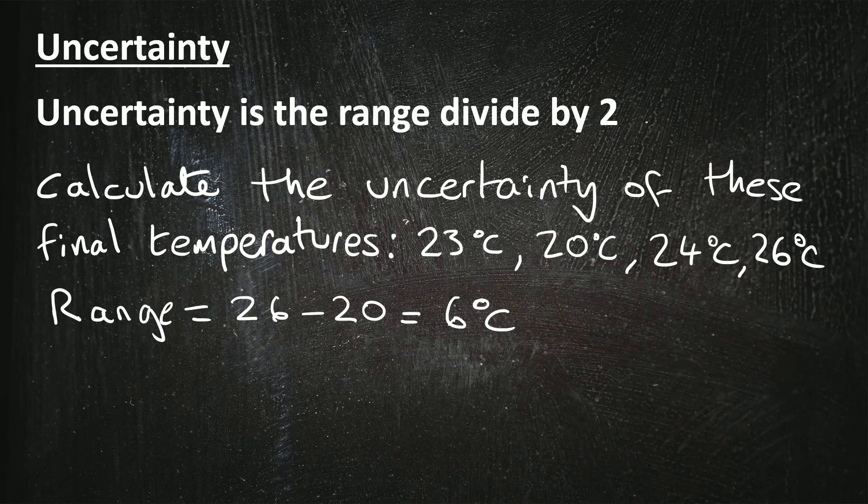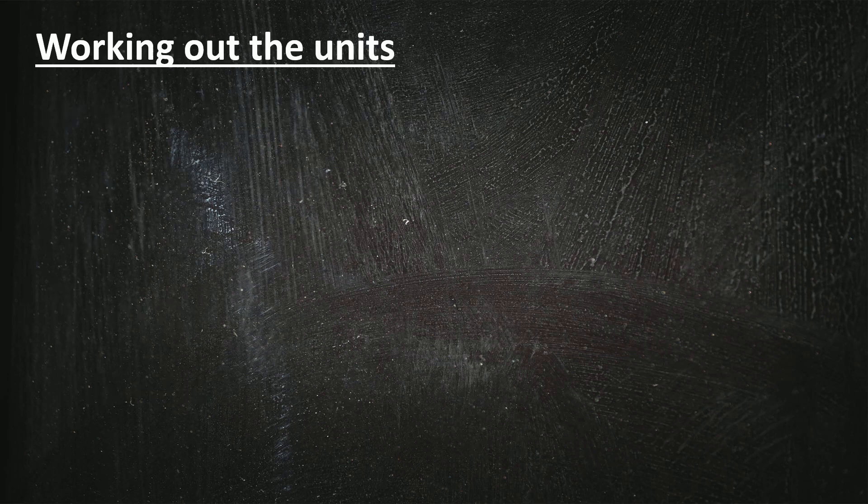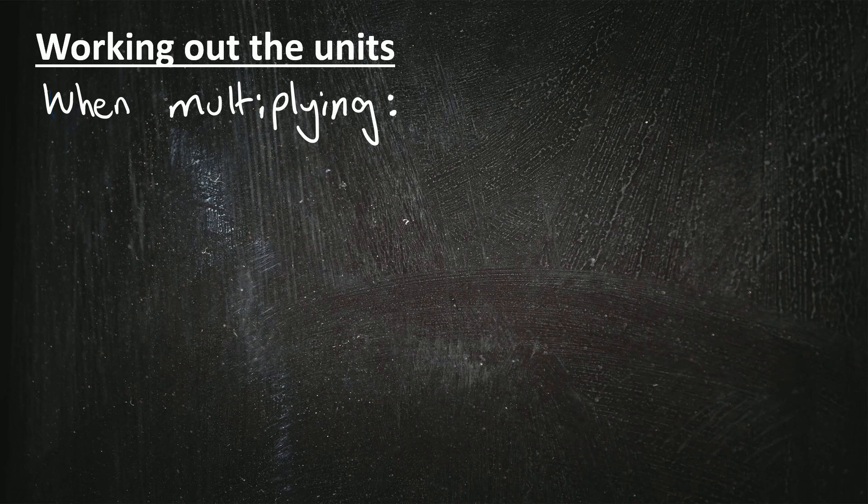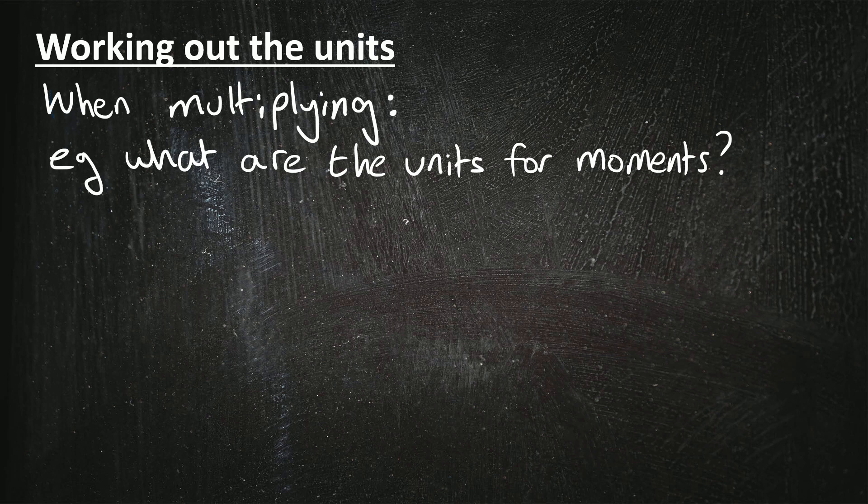Finally I want to give you some help on working out the units, so that when you've done all the hard work of working out a calculation, you're getting that extra mark for writing the correct unit. Now you could simply learn all the units that you might ever come across, but there is actually a logical way of working it out. So when you're multiplying two numbers together, for example taking an example from physics, what are the units for moments, the turning force? A moment is the force times the distance. Now we know that force is measured in newtons, N, and distance is measured in meters. So when you times into units together like this, you simply put them side by side. So the unit for the moment is newton meters, Nm.